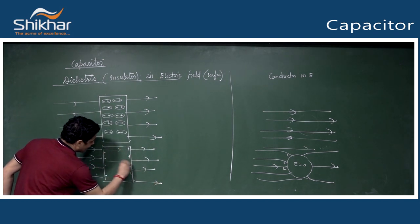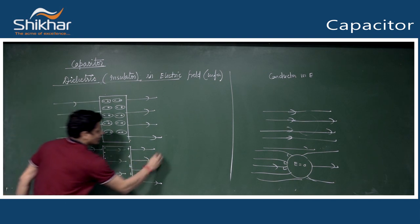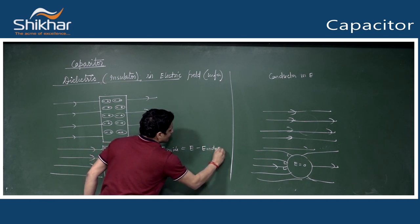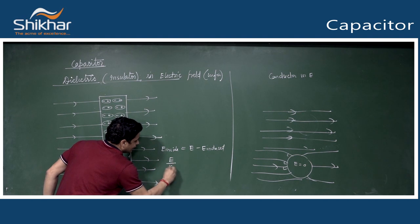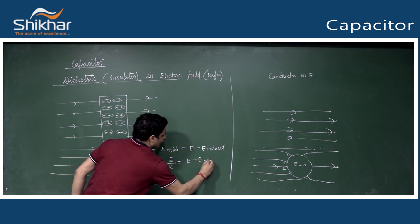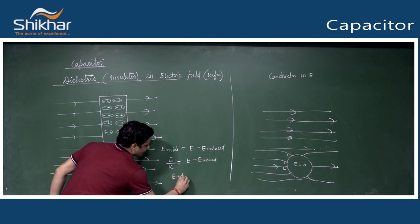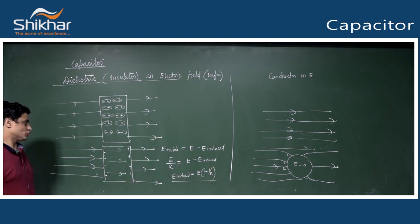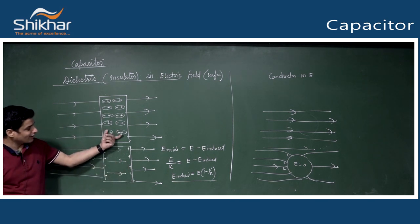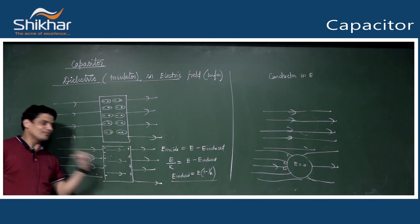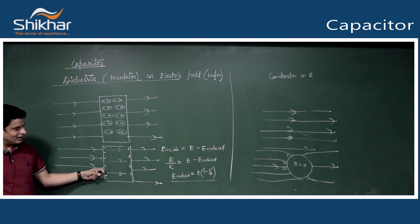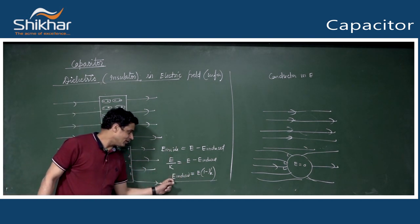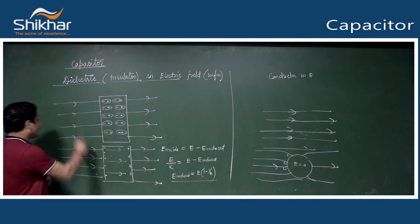Inside the dielectric, electric field E_inside = E - E_induced, and we know E_inside = E/K. So E_induced = E(1 - 1/K). The induced electric field is anti-parallel to the external field E, and its magnitude is E(1 - 1/K). This induced field is due to the dipoles created inside the dielectric.